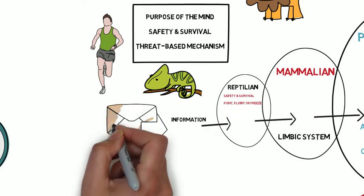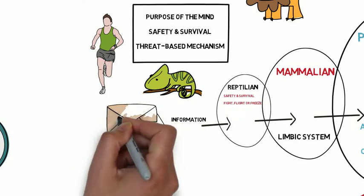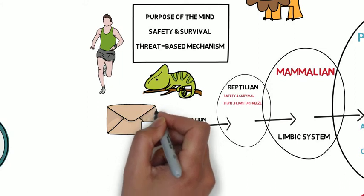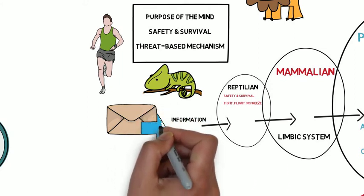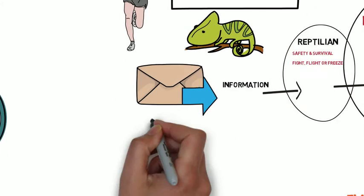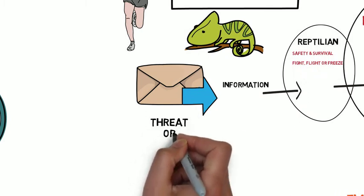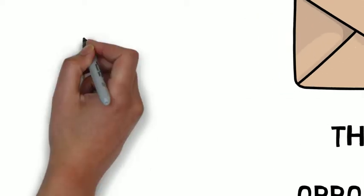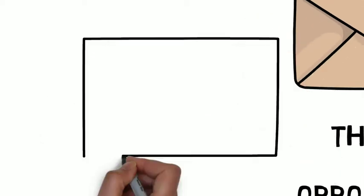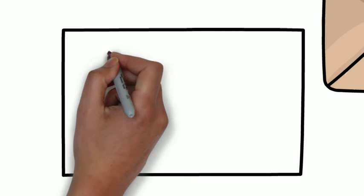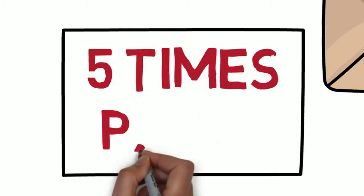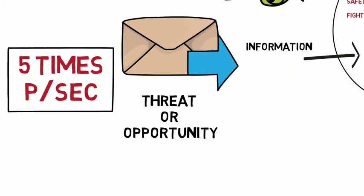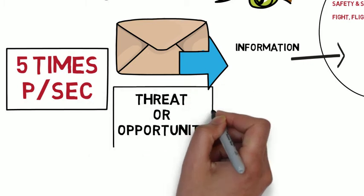So what happens normally is that information comes into the reptilian brain. The way that the reptilian brain looks at this information, it asks one question. Is this a threat, or is this an opportunity? Now, through neuroscience and FMRIs, what they've found is that five times per second, your reptilian brain is actually going through this questioning.